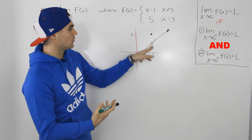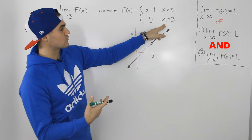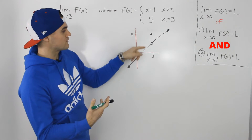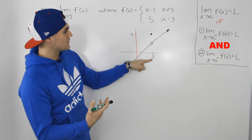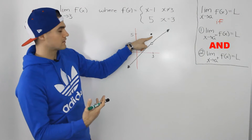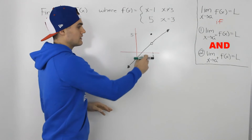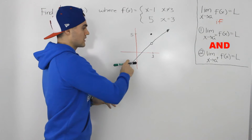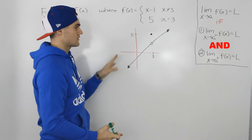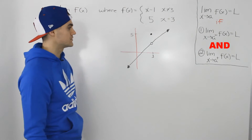So at an x value of 3, there's this hole here, but in the function at an x value of 3, the function is defined at a y value of 5. So at an x value of 3, there's this point here at a y value of 5, and for any x value other than 3, the function is defined by this line. So this graph represents this piecewise function.